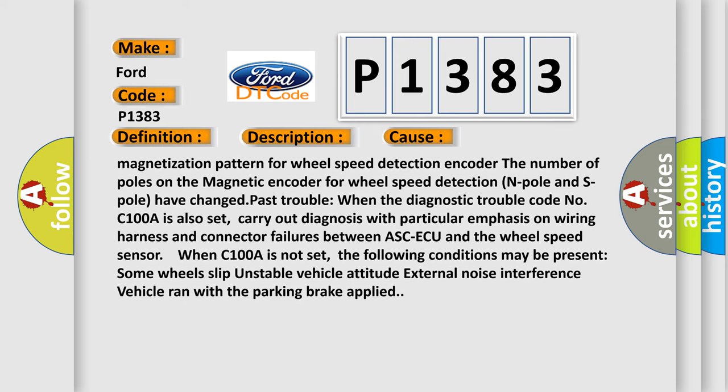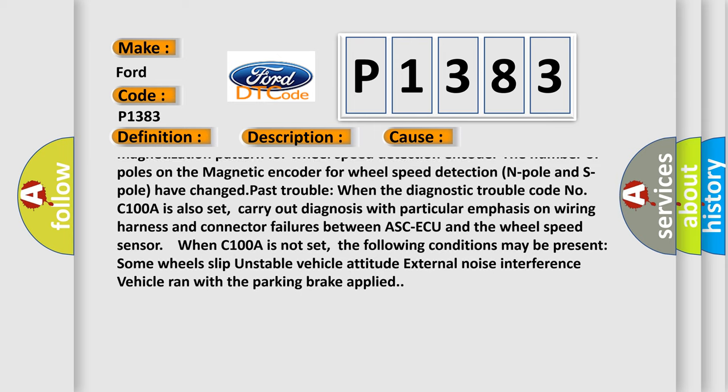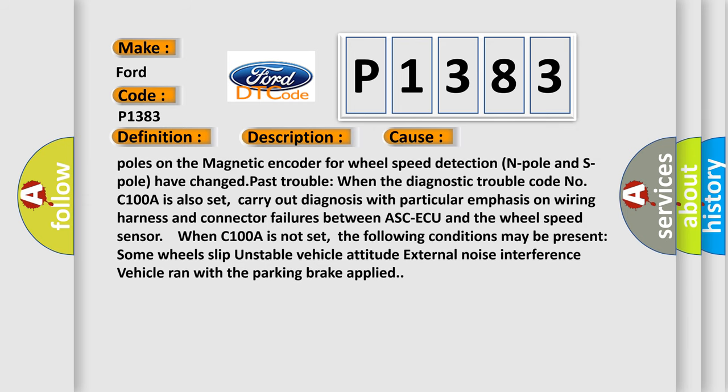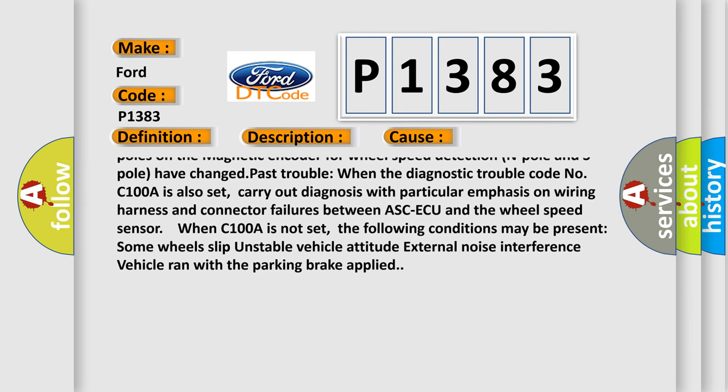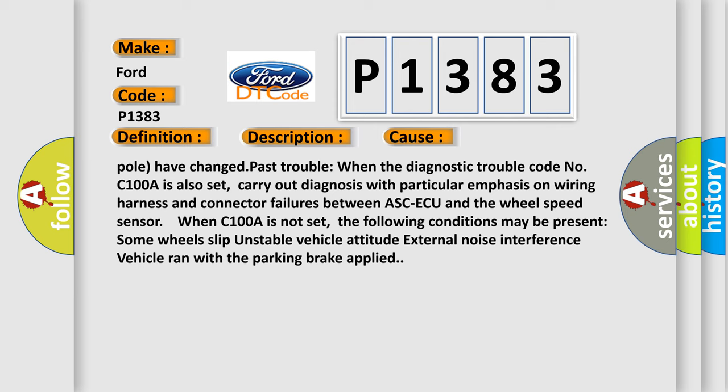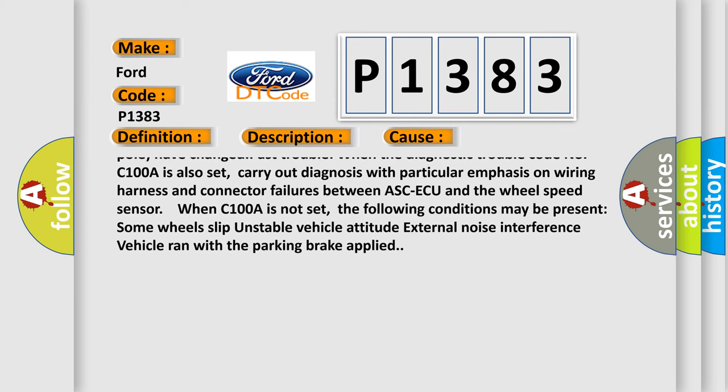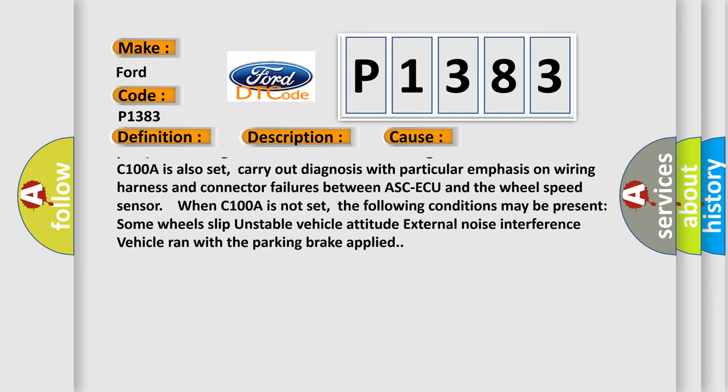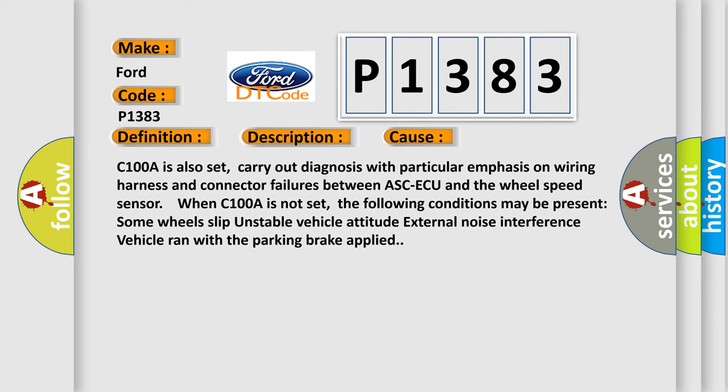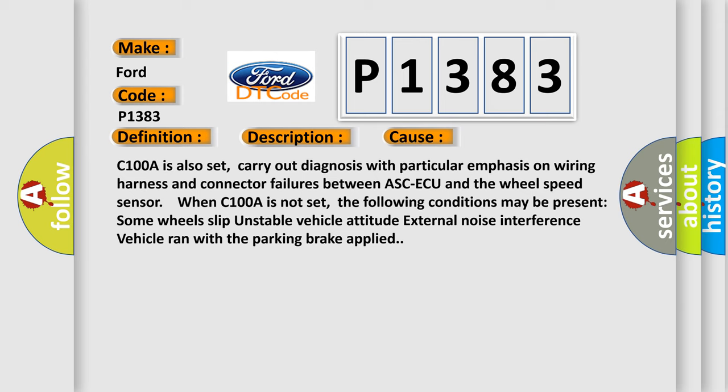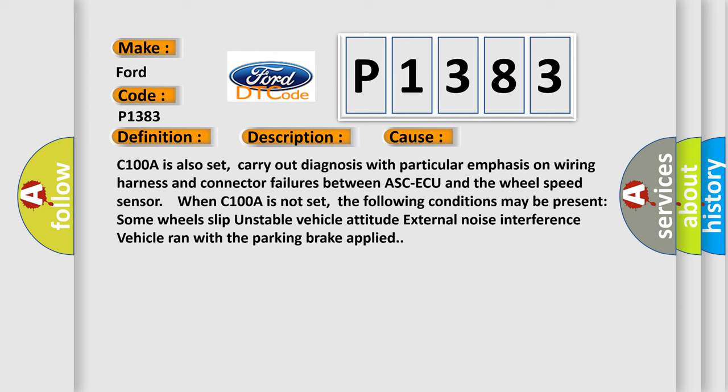Past trouble: When the diagnostic trouble code C100A is also set, carry out diagnosis with particular emphasis on wiring harness and connector failures between ASC-ECU and the wheel speed sensor. When C100A is not set, the following conditions may be present: some wheels slip, unstable vehicle attitude, external noise interference, vehicle ran with the parking brake applied.